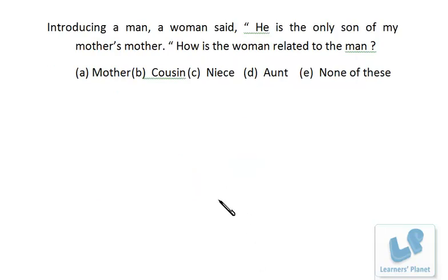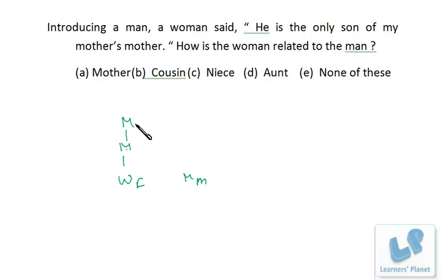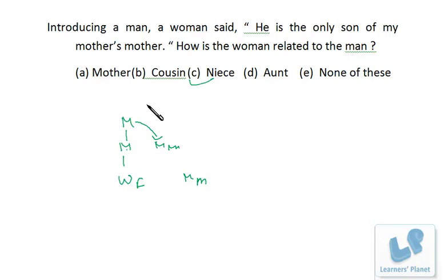Next: A woman said, introducing a man, 'He is the only son of my mother's mother.' The woman is female. Her mother's mother means the grandmother. The man is the son of the grandmother — so one generation difference exists between the grandmother's son and the woman. That means he is the brother of her mother, so he is her uncle (mama), and she is his niece. Very simply done in just 30 seconds.